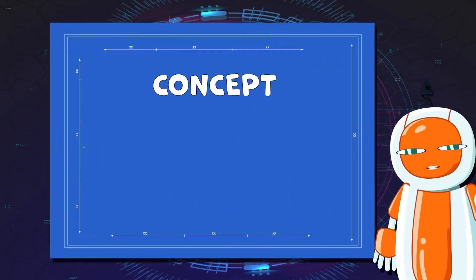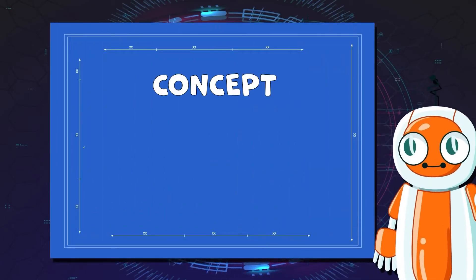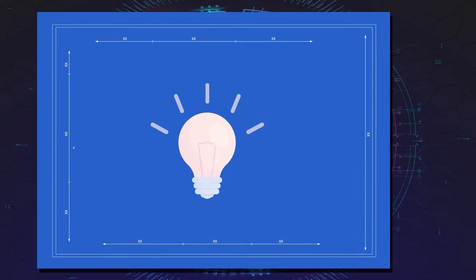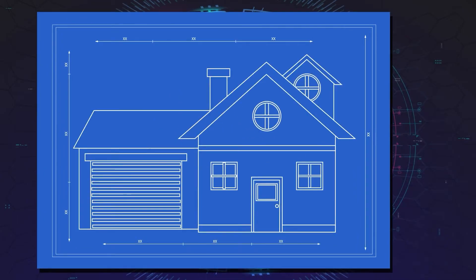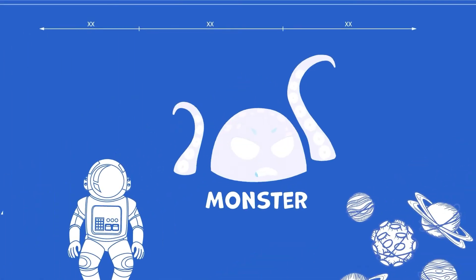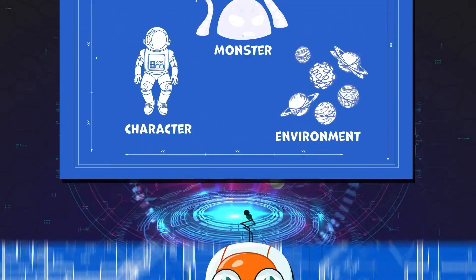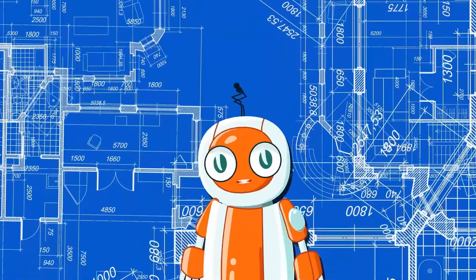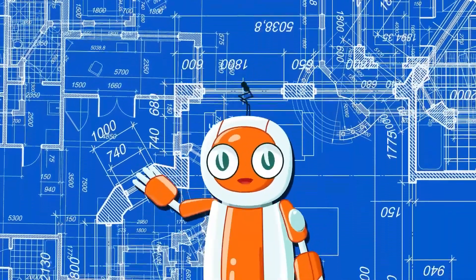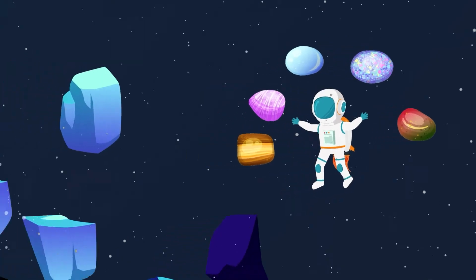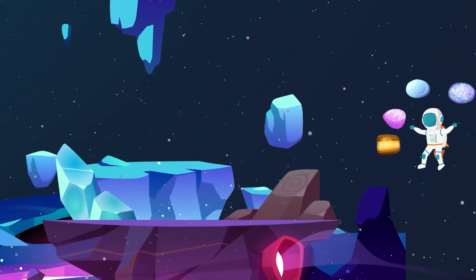First up, we've got the concept. Every game starts as an idea. Think of the concept as the blueprint of a house — it outlines what the game is about, who the characters are, and what challenges await players. A strong concept is the cornerstone of every successful game. Imagine you want to create a game about a spaceman who collects cosmic gems. That's your concept.